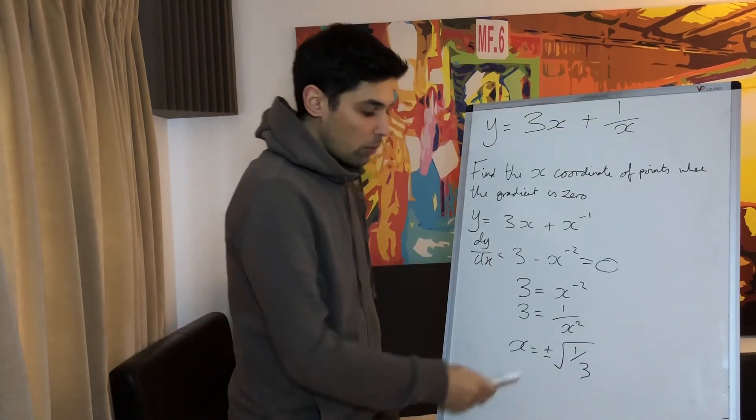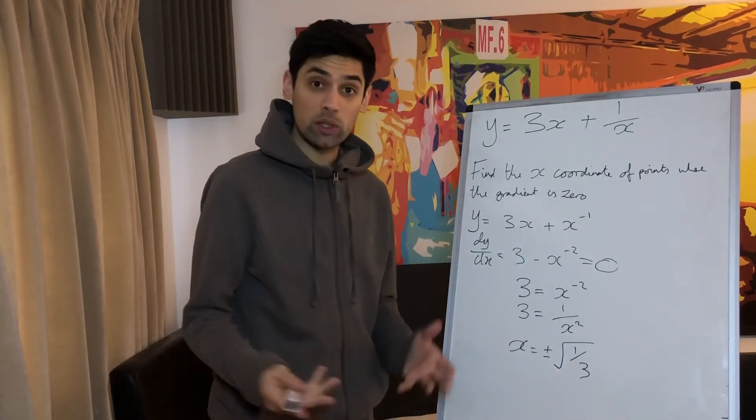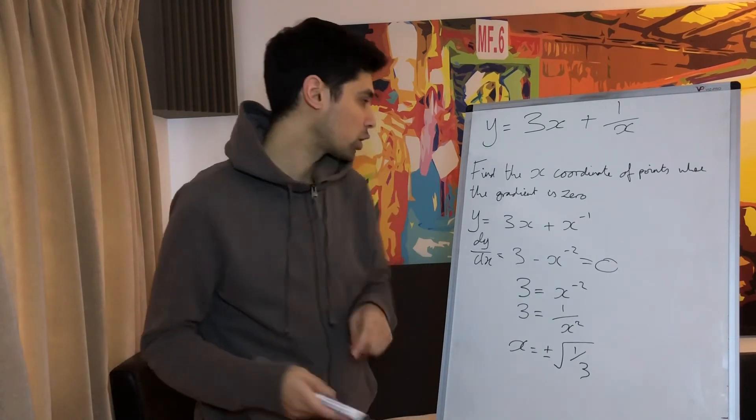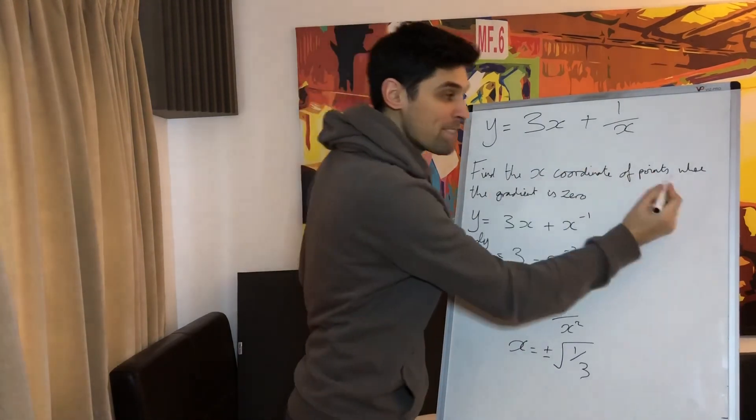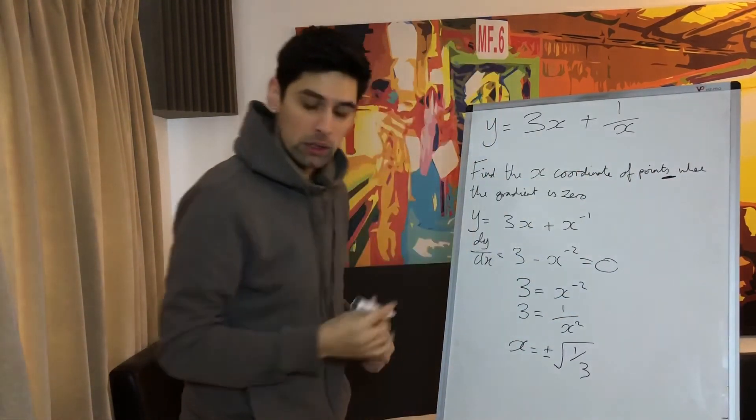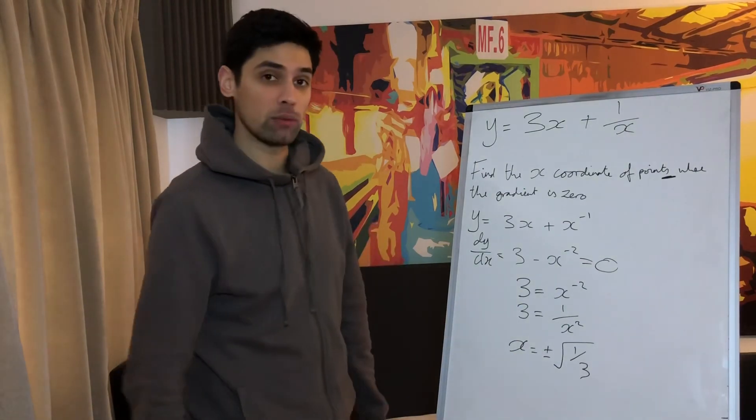Now it's important we do the plus or minus there because whenever we're square rooting something, we need to do plus or minus. But also it gives us a clue. Find the x coordinate of the points. Fucking points, plural. There's going to be more than one. That's where it's plus or minus.